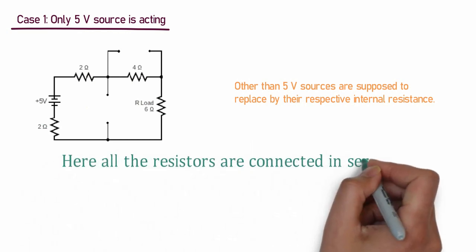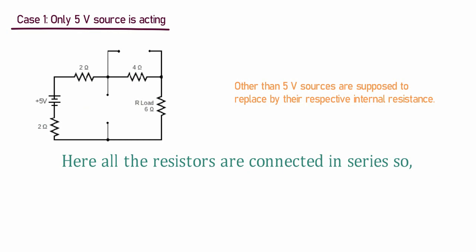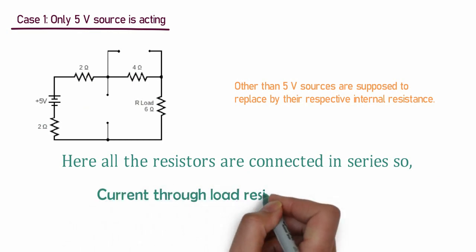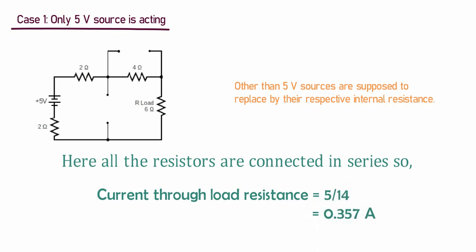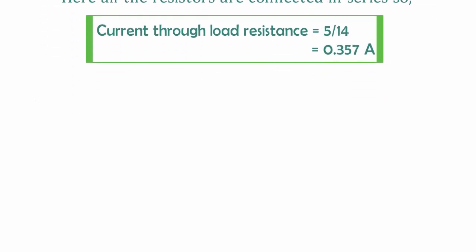From the circuit, it can be seen that all resistance are connected in series. So, current through load resistance is 0.357A. This is only possible while only 5V voltage source is connected.